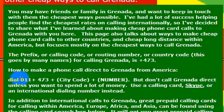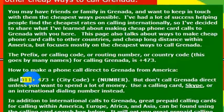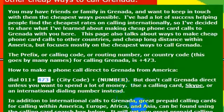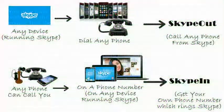To make an international phone call to Grenada from the United States, you dial 011 — this is from any phone that is enabled to make an international phone call — then 473, which is the country code for Grenada.